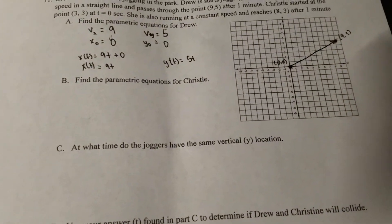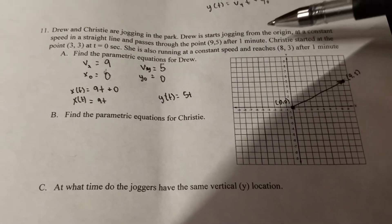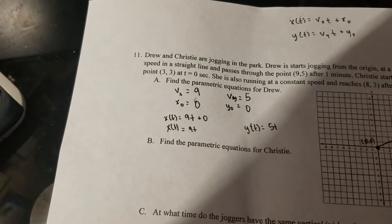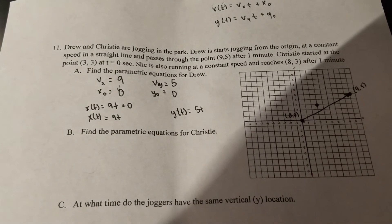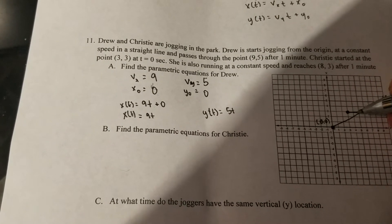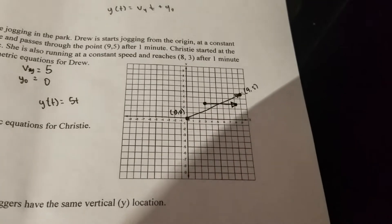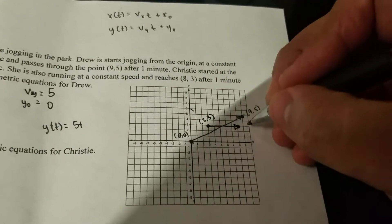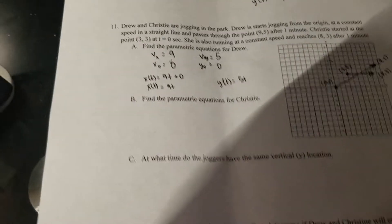Part B is now to ask me to find the parametric equations for Christie. So if I keep reading, it tells me Christie started at the point three three, so three and then one two three. And she runs at a constant speed and reaches eight three, so eight one two. So she's running straight line like this. Starting at three three and she ends up at eight three.